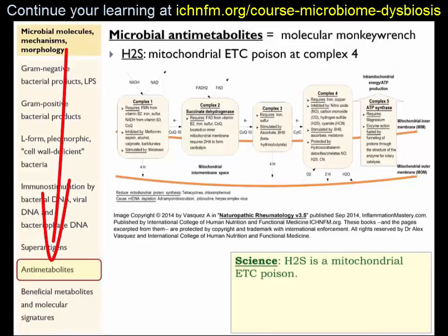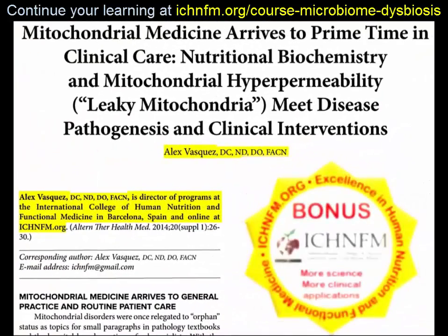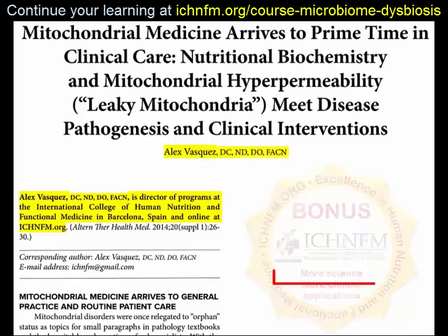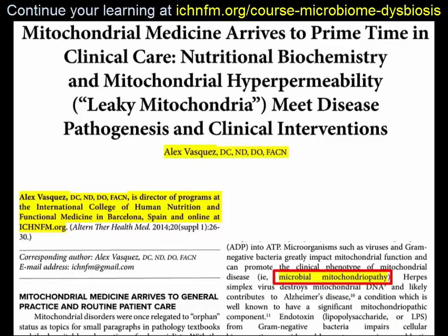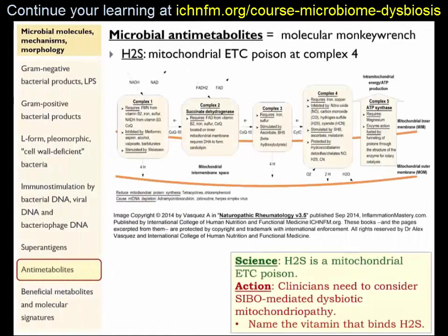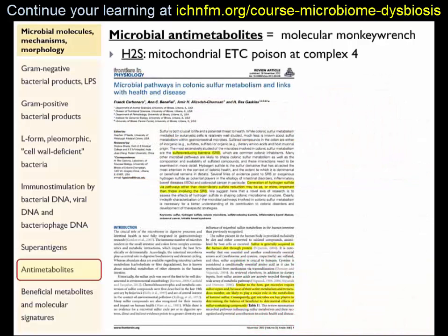What the science shows us is that hydrogen sulfide is a mitochondrial poison very similar to cyanide, except that hydrogen sulfide is produced from microbes within the gastrointestinal tract. We want to consider addressing this component anytime we're dealing with a patient who has what I call dysbiotic mitochondriopathy — a mitochondrial disorder caused by dysbiosis. We now have clear evidence that gastrointestinal bacteria can produce mitochondrial toxins: D-lactic acid is a mitochondrial toxin produced by gastrointestinal bacteria, hydrogen sulfide is also a mitochondrial toxin, and endotoxin from gram-negative bacteria also produces mitochondrial dysfunction. You can bind or neutralize hydrogen sulfide by using a specific vitamin, and I'll show you that in just a moment.